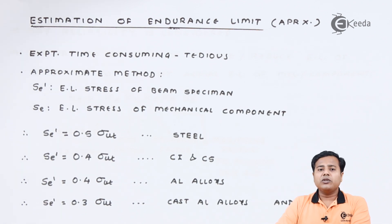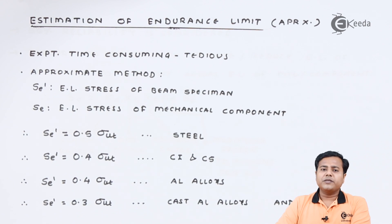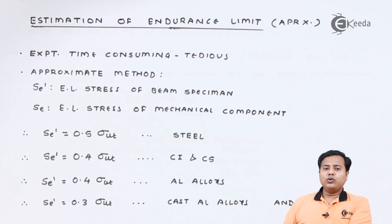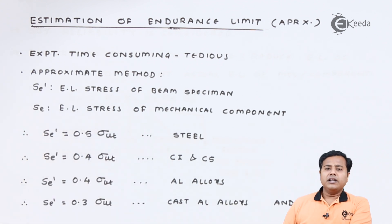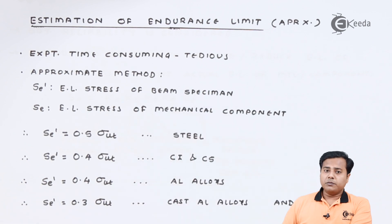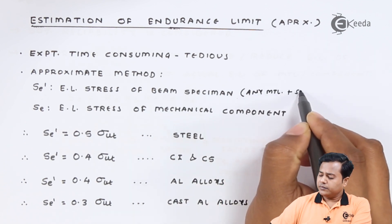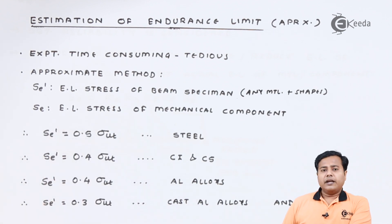The standard specimen undergoes proper finishing and proper machining, as it is created specifically for specimen testing. That is why the results obtained using specimens were related by means of certain factors to the actual endurance limit. In the approximate method there are two notations to consider: SE' and SE. SE' is the endurance limit stress of the beam specimen — it may be of any material and different shapes — whereas SE is the endurance limit stress of the actual mechanical component used in practice.